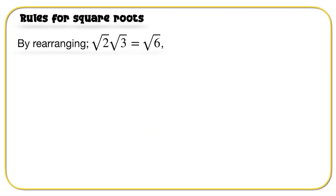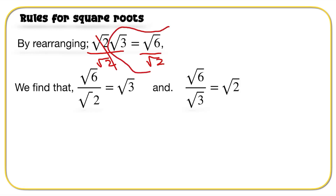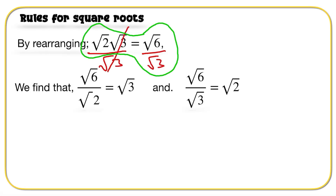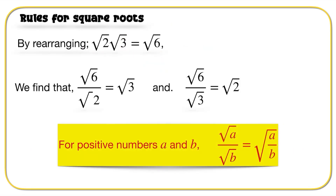Here's another rule. By rearranging root 2 times root 3 equals root 6, we get: root 6 divided by root 2 equals root 3, and root 6 divided by root 3 equals root 2. So for all positive values A and B: root A over root B can be written under one radical sign as the square root of A divided by B. Pause the video and write that down.